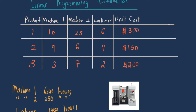We'll go over an example of defining a linear programming formulation for a particular problem. Let's say that we have three products: product one, product two, and product three. Making one unit of product one takes 10 hours with machine one, 25 hours with machine two, and six hours of labor, and you can sell one unit of product one for $300. Product two requires nine hours with machine one, six hours with machine two, four hours of labor, and you can sell one unit of product two for $150.